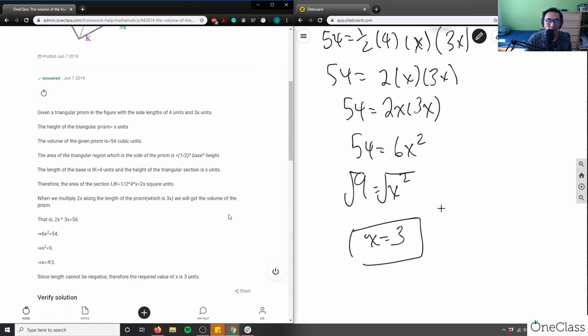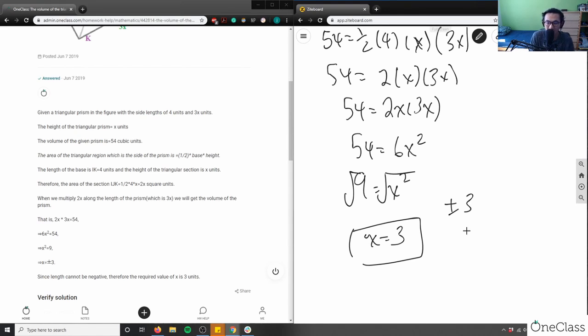So I have, again, whenever I square root something, it could be plus or minus 3. But in this case, I can't have a negative length. That makes no sense, right? So my answer is actually positive 3. This would be positive 3 units.